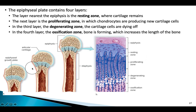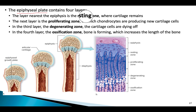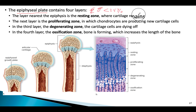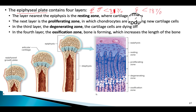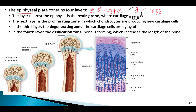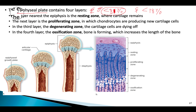The epiphysial plate is the part of the bone that continues to grow. It is present in males less than 21 years of age, and in females less than 18 years of age. Clinically, if a physician looks at an x-ray of a long bone belonging to a male and the epiphysial plate is still present, they know that individual is less than 21 years old.